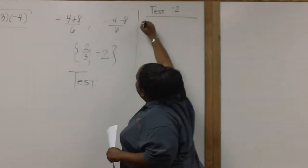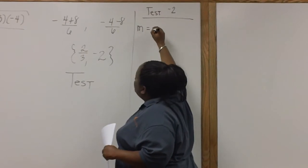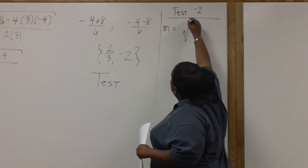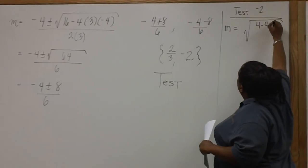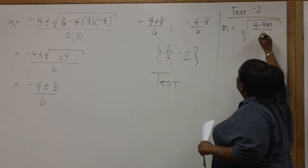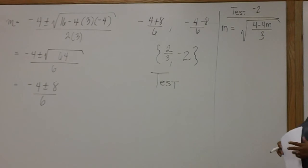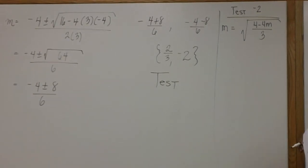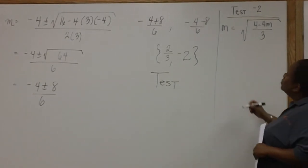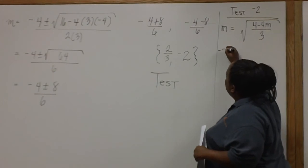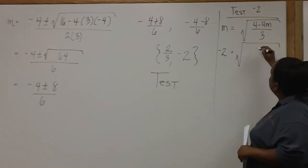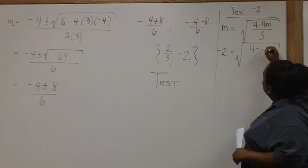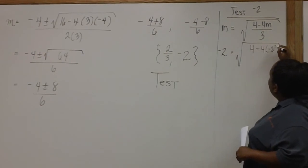So I'll go ahead and write the original equation. And in place of m, we're going to put negative 2. So we have negative 2 here in place of m.